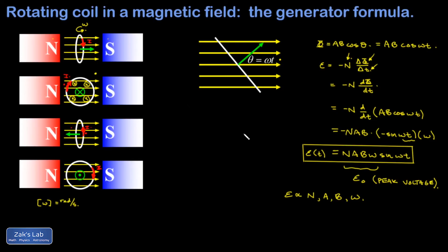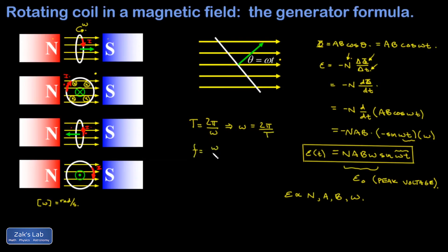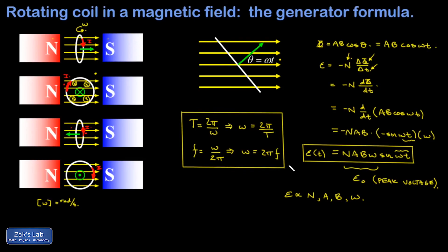Problems involving this generator formula often give frequency or period of rotation, and you need to relate those to omega. For a sinusoidal function, the period T equals 2π divided by the coefficient of t, so T = 2π/ω, or equivalently ω = 2π/T. Frequency is the reciprocal of period, so frequency f = ω/(2π), or ω = 2πf. When working generator formula problems you'll frequently deal with these conversions between period, frequency, and angular velocity.